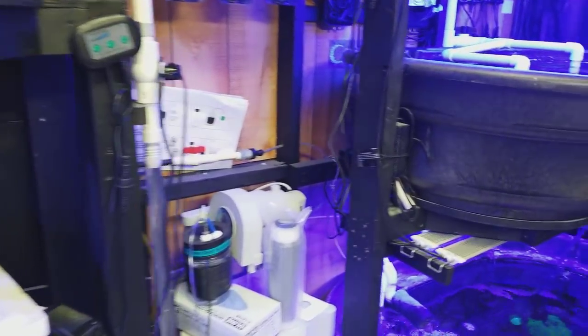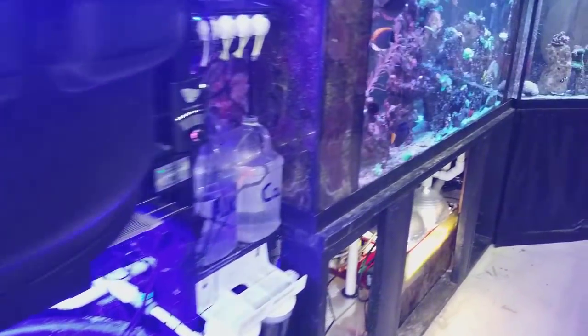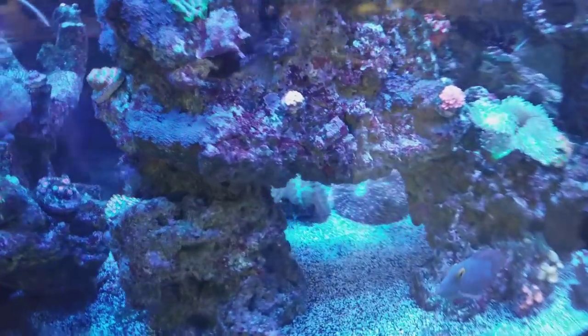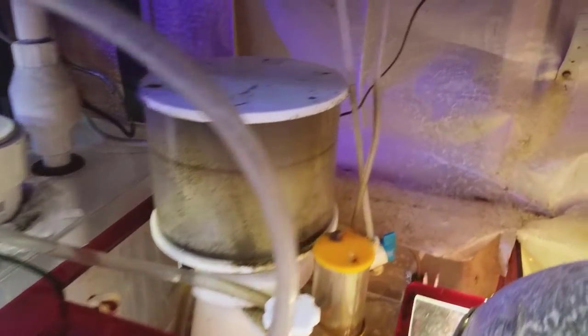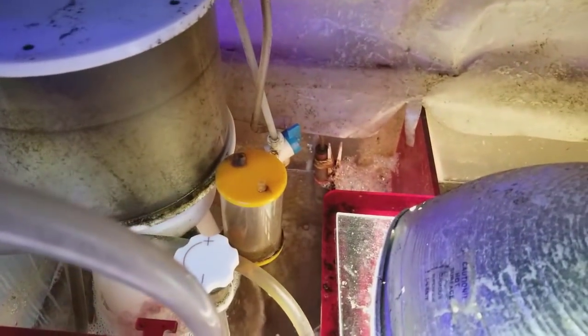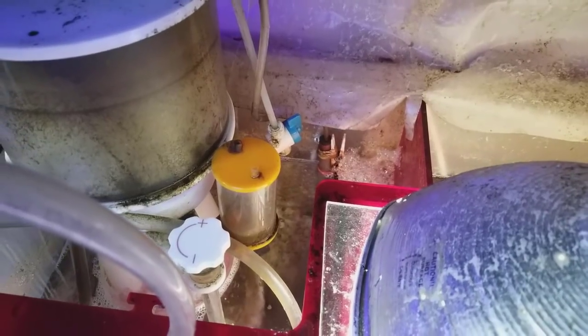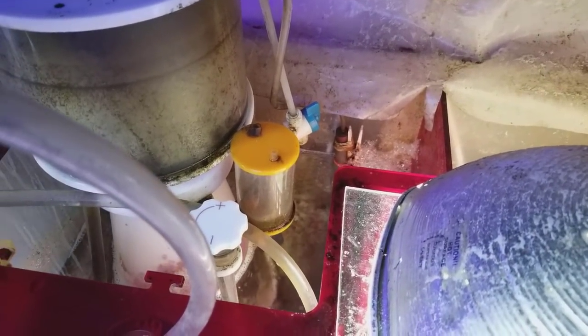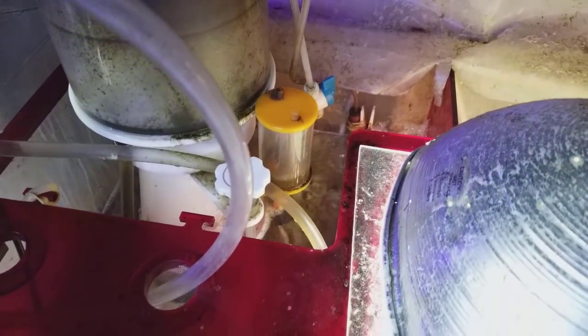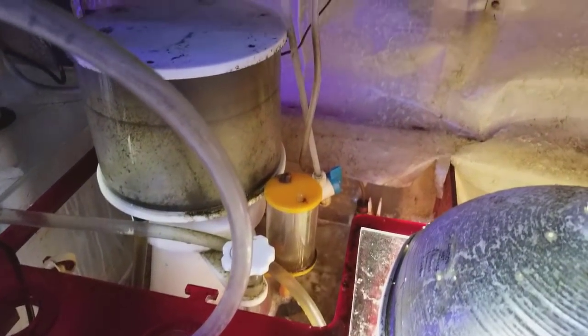But I just realized one of my tanks, even though it does use the same RODI system, I thought I updated this one but if you look in there it still has the old vacuum sensor that turns on. It just opens the line, the water drips out.